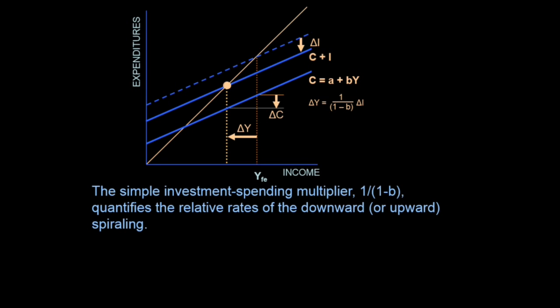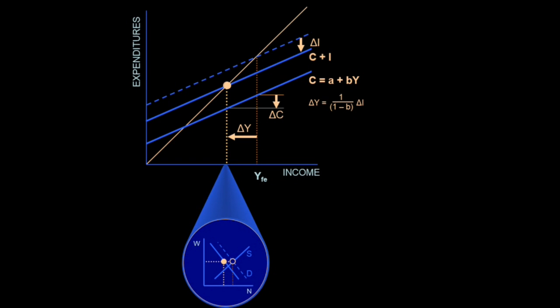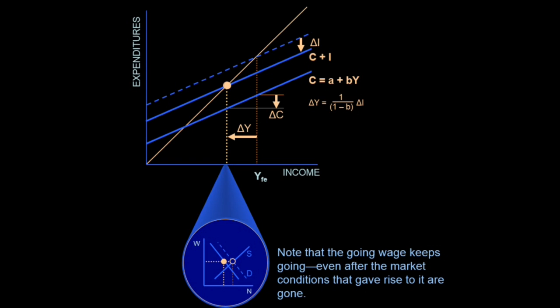The simple investment multiplier is 1/(1-b) — you might have seen that in your textbooks. That quantifies the relative rates of downward or upward spiraling. Look at the labor market: the demand for labor has fallen because people aren't investing as much, they're not hiring people. But the wage rate hasn't changed — because it's the going wage rate. Note that the going wage keeps going even after the market conditions that gave rise to it are gone. Keynes had three arguments about the wage rate — similar to a lawyer's argument: wages are sticky, they don't change. And he also argued there's a good thing they don't change because what we need is more demand.